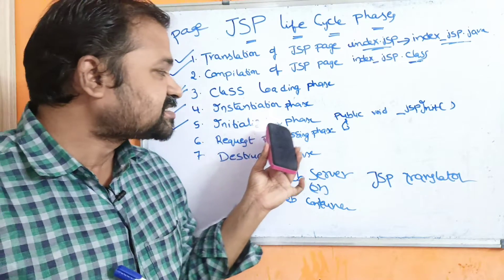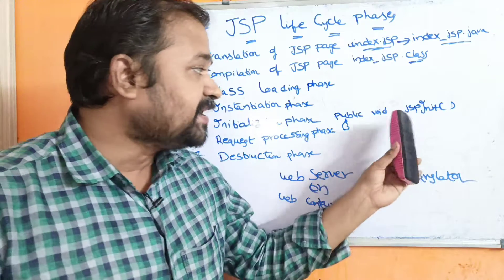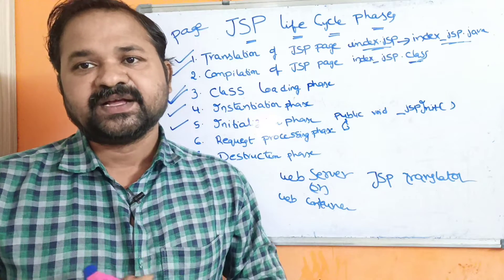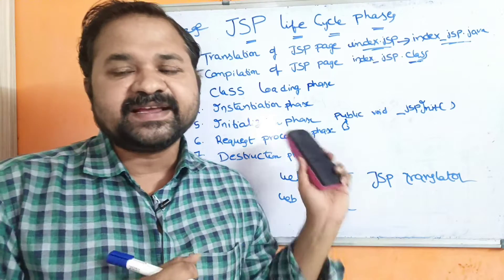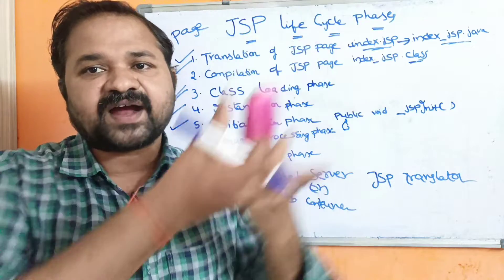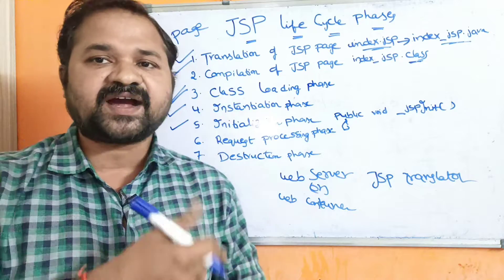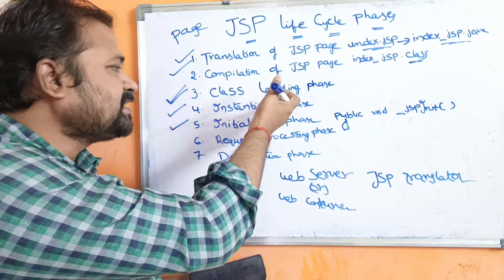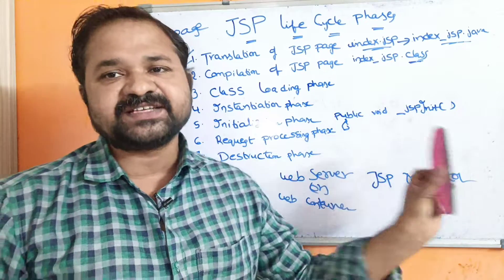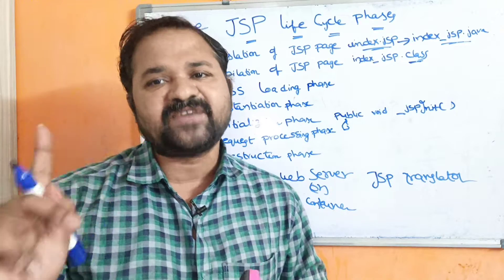How many times will the _jspInit() method be executed? Initialization will be done only once — whenever we start the corresponding application or server. After loading the class file into main memory and after instantiation, initialization is performed automatically. So this method is executed only once.